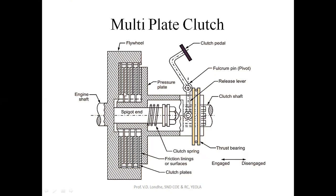In this multi-plate clutch, this is the shaft coming from the engine, called the engine shaft, and it is attached to the flywheel. The flywheel is the output part of the engine. The purpose of the flywheel is to store energy and release it when required. So this flywheel is the input part to the transmission system, coming from the engine.